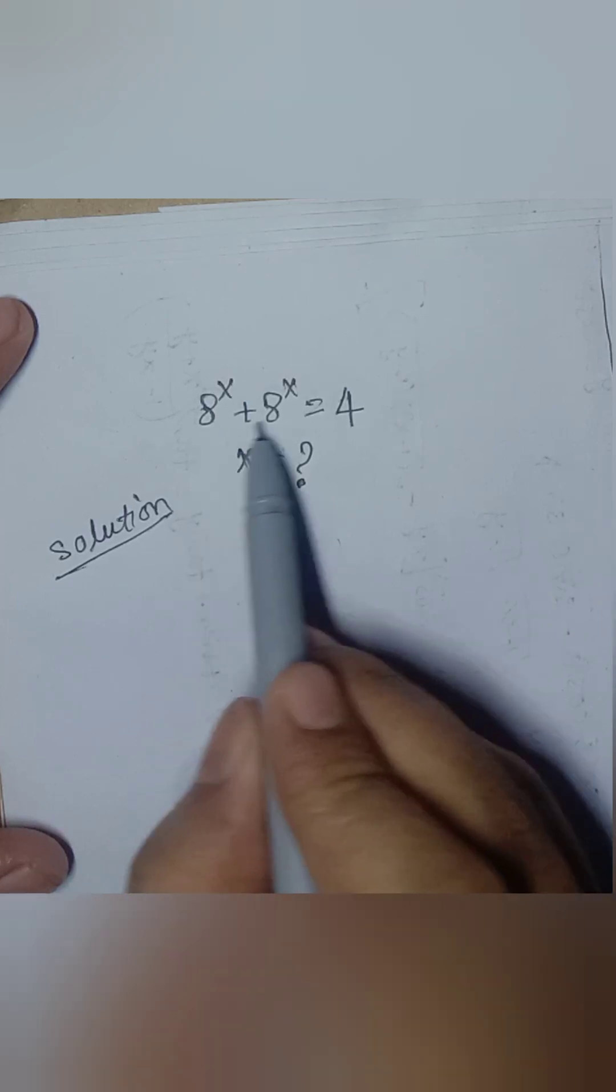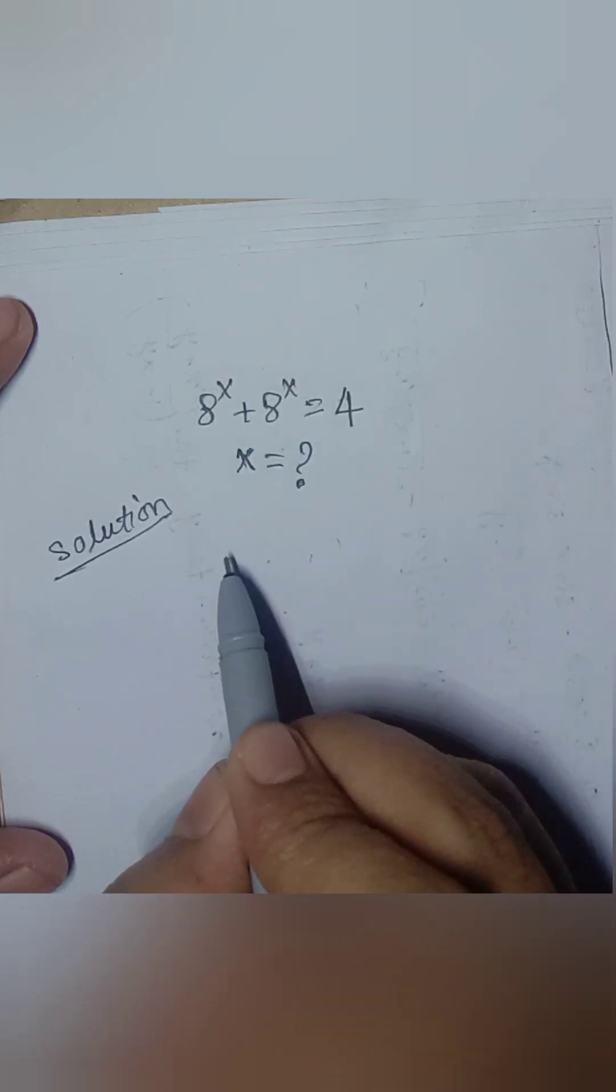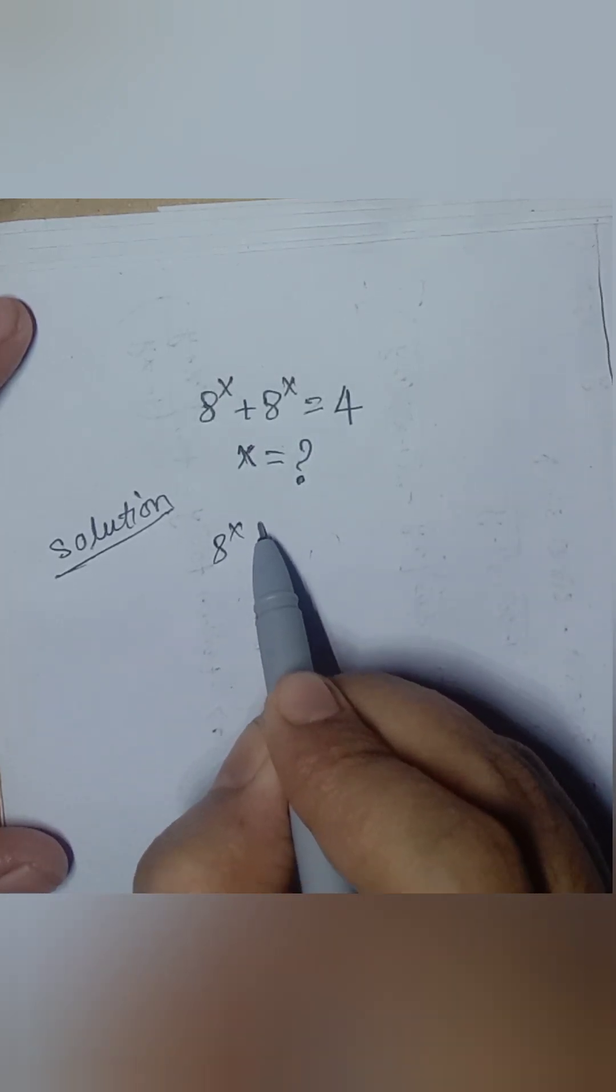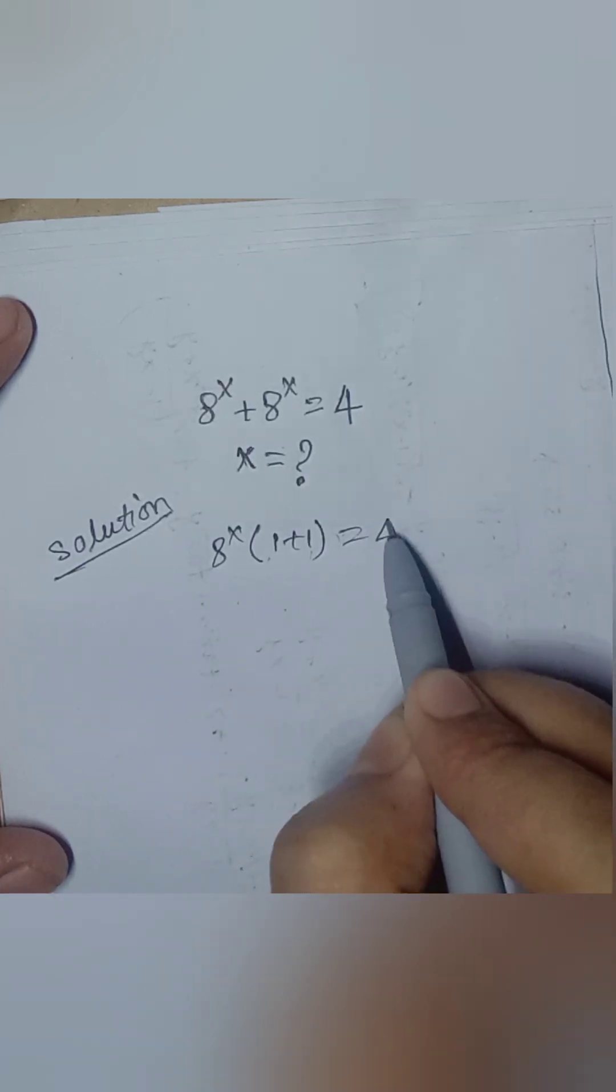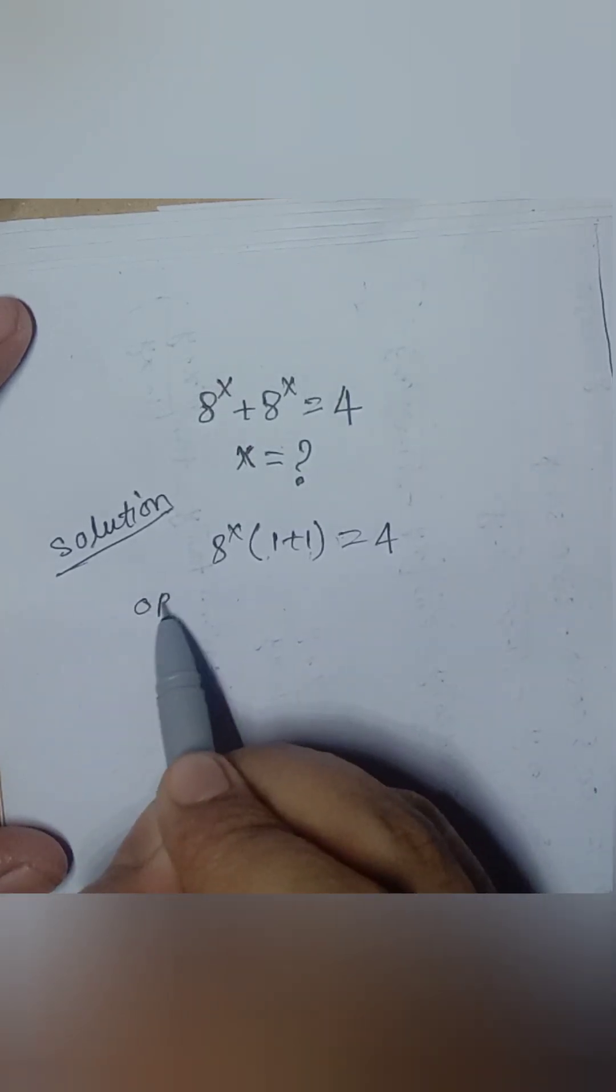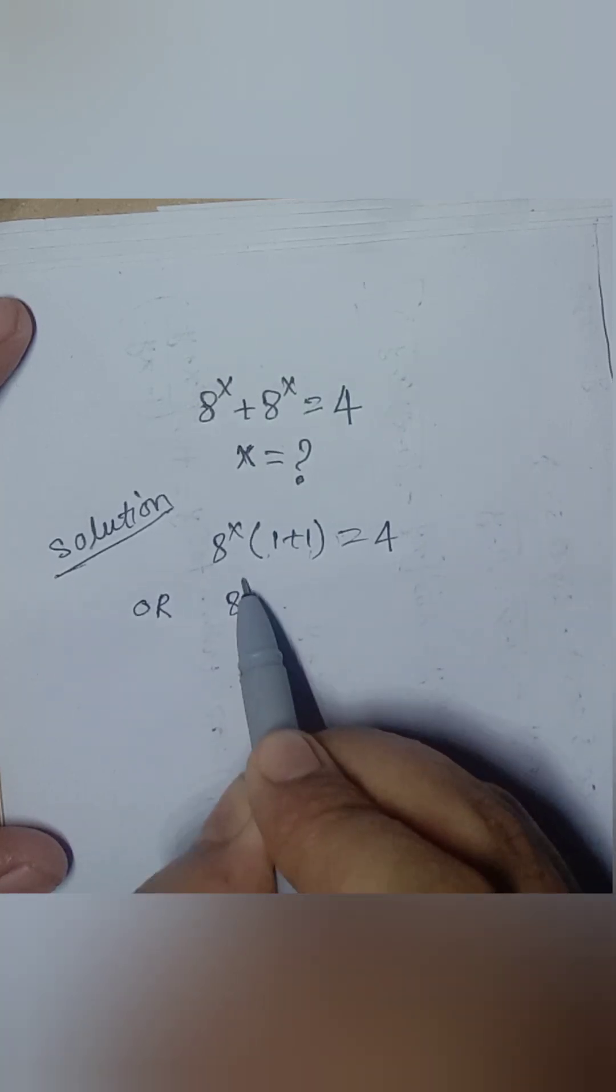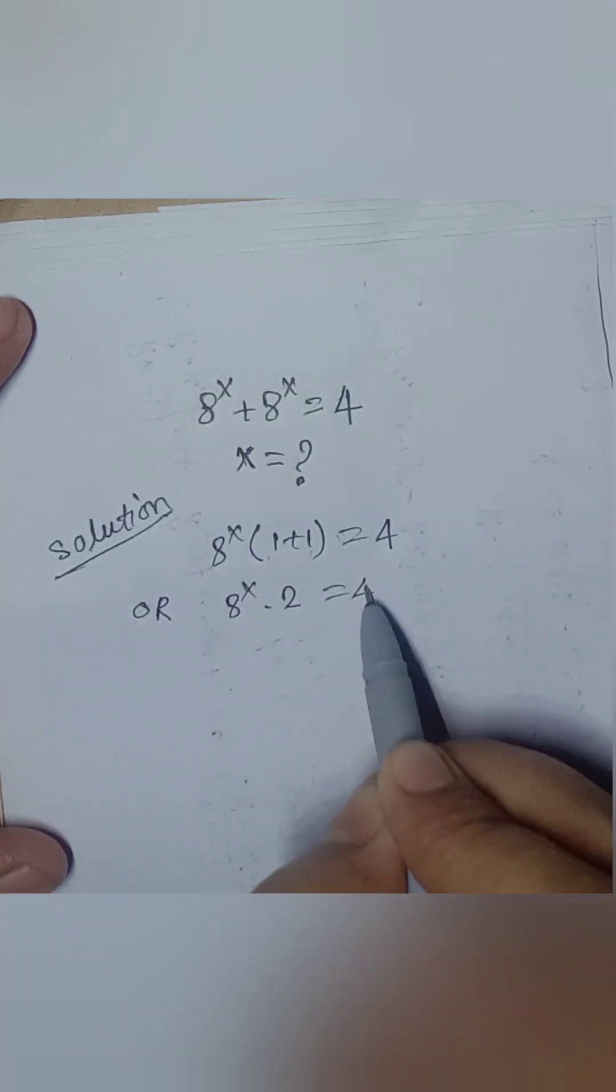Here, 8 to the power x is common. So, 8 to the power x multiplied by 1 plus 1 is equal to 4. Or, 8 to the power x into 2 is equal to 4.